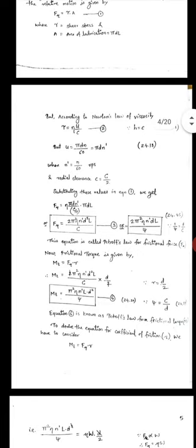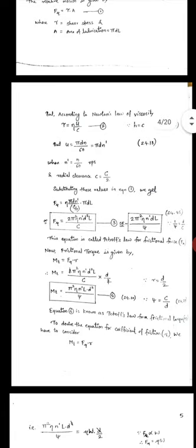So from equation 1 we get F_mu equals nu pi D N dash by C by 2 times pi D L, or 2 pi square nu N dash D square L by C, or 2 pi nu N dash D L by C times psi, where psi is D by C, equation number 3.